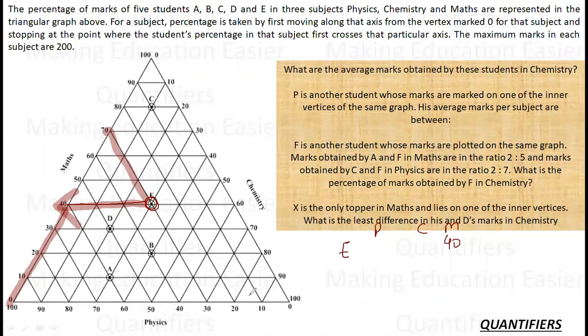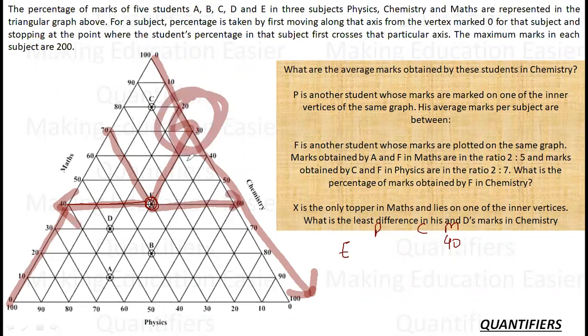Let's do it for Chemistry also. Now where will you move for Chemistry? You have to move from 0 to 100. This is the direction you need to move. Now for Chemistry, where is the line going towards this point? One line is going towards this point. So which line will intersect first? This line will intersect first. So E's score in Chemistry is 30.